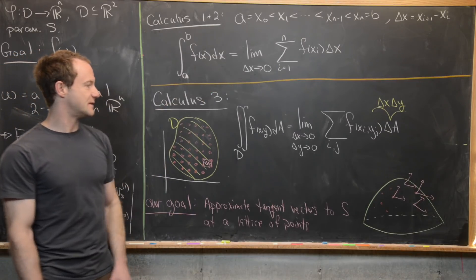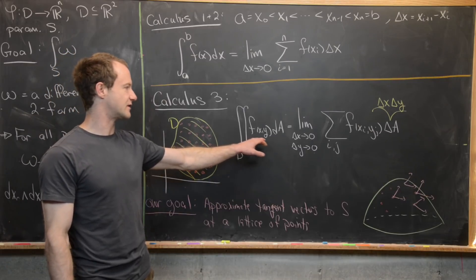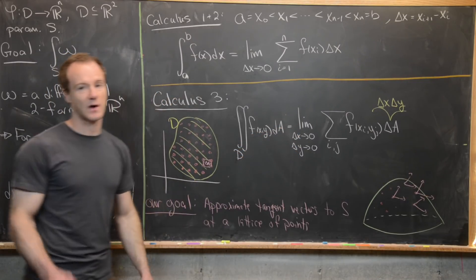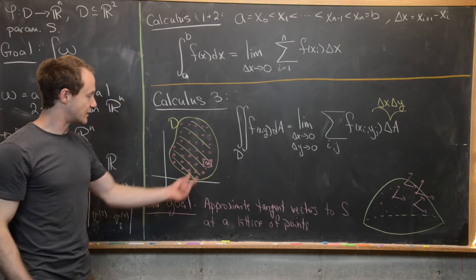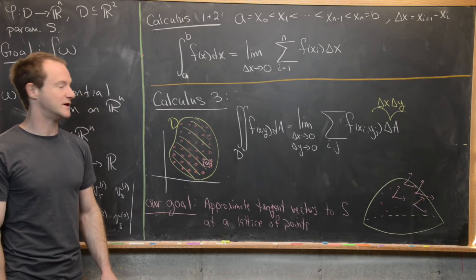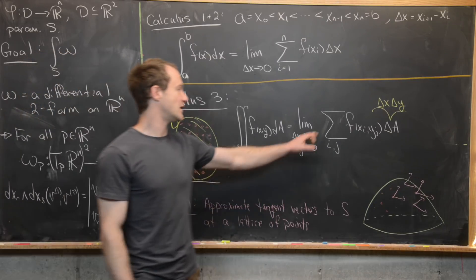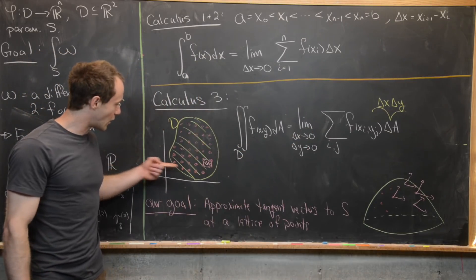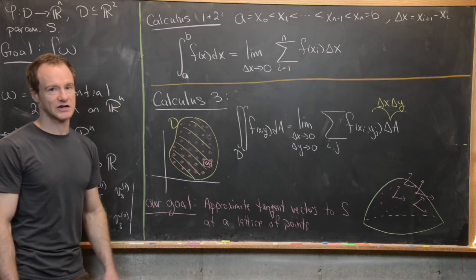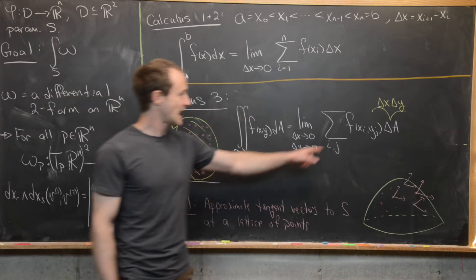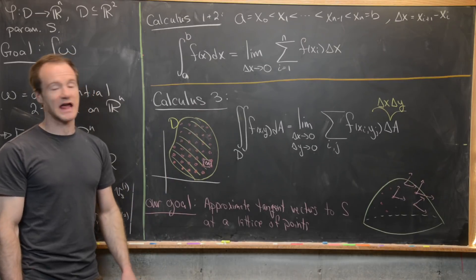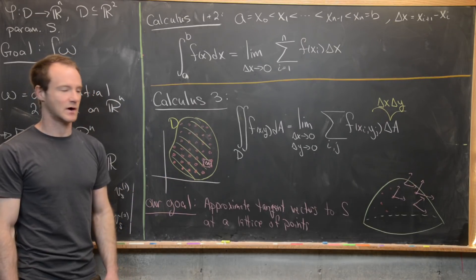Taking inspiration from the 1D case, we define the double integral to be the limit as delta x and delta y both go to 0 — so the horizontal and vertical distance between lattice points goes to 0 — of the double sum over i and j of f evaluated at the lattice points times delta A, which is delta x times delta y.